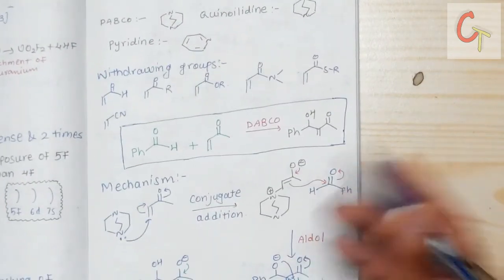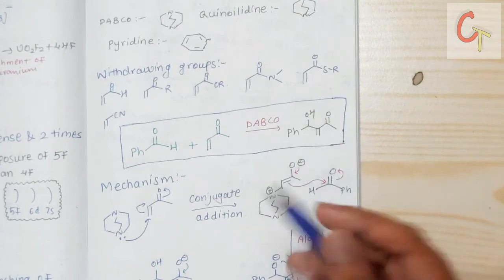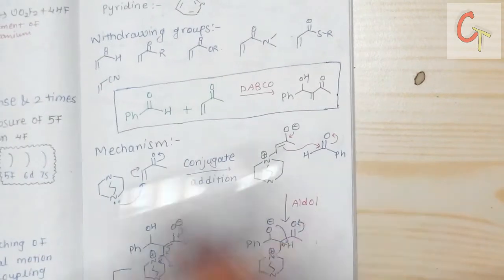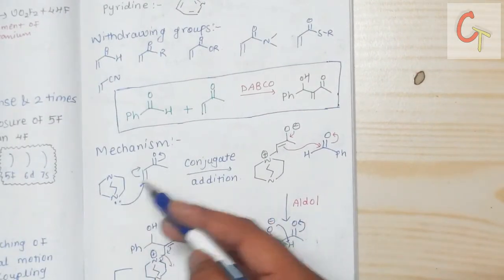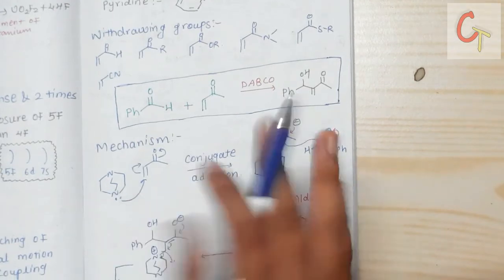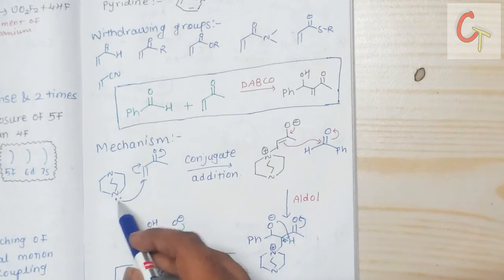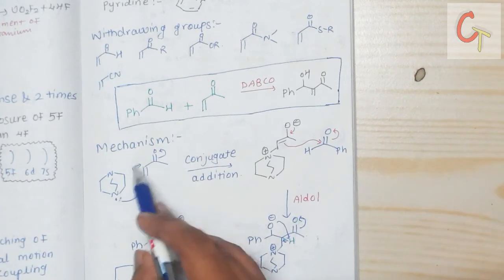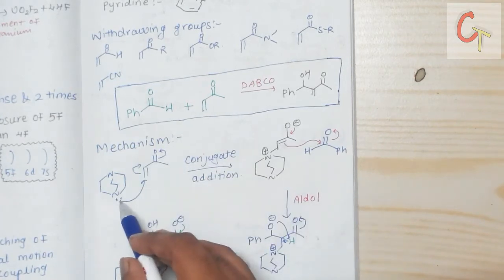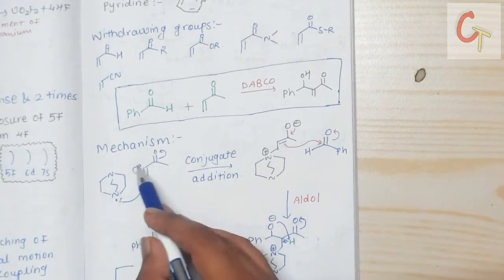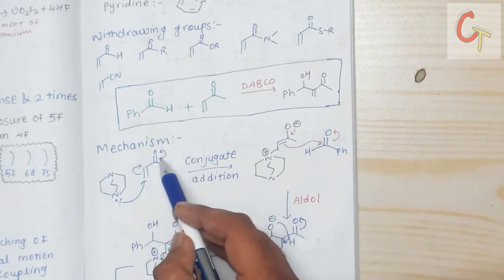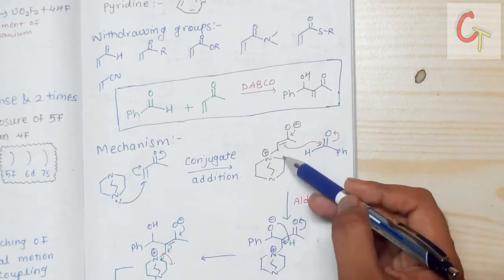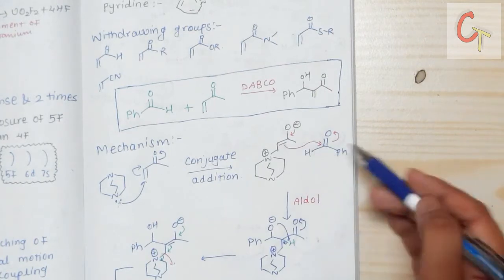Now let's look at how this reaction proceeds via mechanism. Generally it is a conjugate addition of the base, followed by an aldol reaction. In the first step, the lone pair of nitrogen on DABCO donates to this carbon, and bond migration takes place — the double bond migrates toward this side, and the oxygen double bond migrates toward this side. That is the conjugate addition step, giving the product formed by conjugate addition.